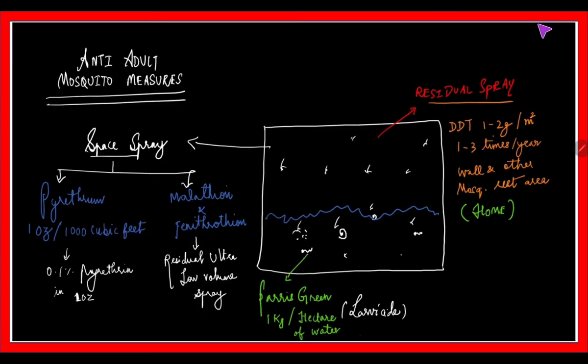Next are anti-adult measures. We use spray: residual spray and space spray. For residual spray, the most important against adults is DDT. DDT is most effective against mosquitoes. DDT is applied at a concentration of 1 to 2 grams per meter squared, 1 to 3 times per year, on walls and places where mosquitoes rest.